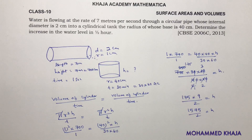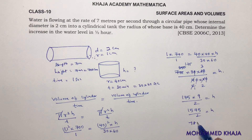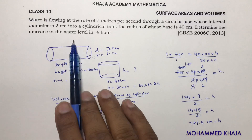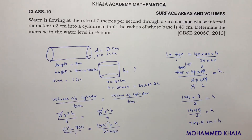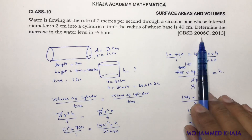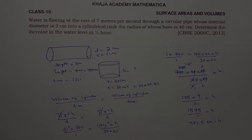Dividing 1575 by 2 gives 787.5 — wait, that is 87.5 centimeters. So 87.5 centimeters is the height through which the water level rises in half an hour. This is an important question that has been asked in 2006 and 2013 exams.